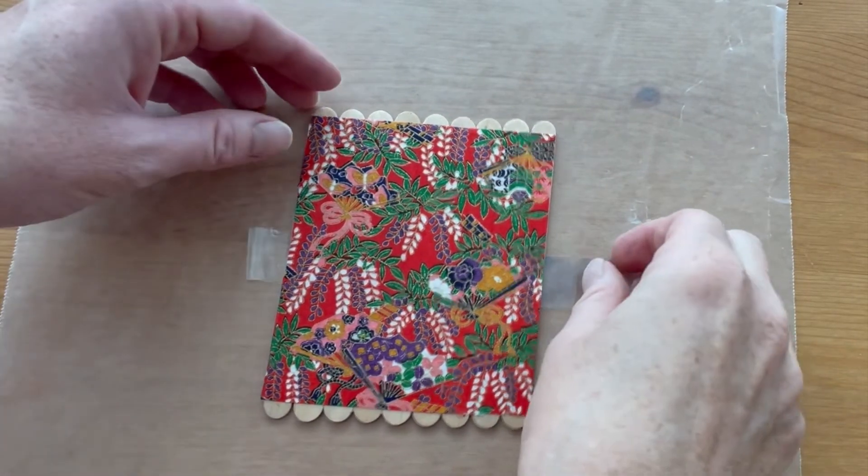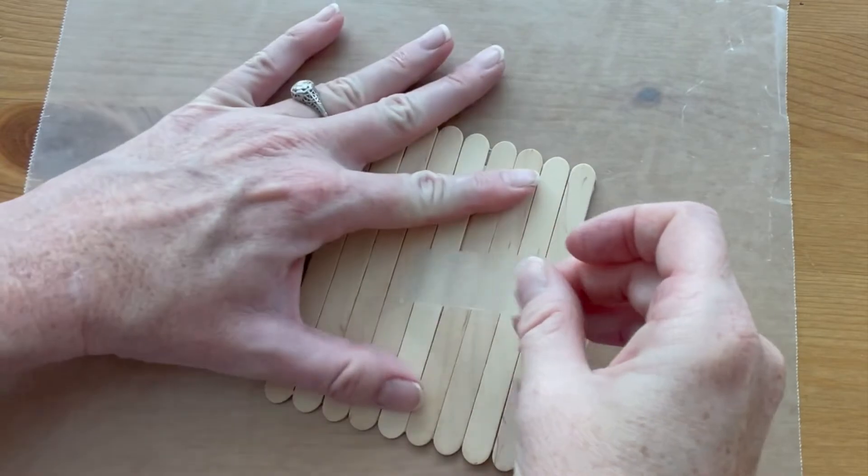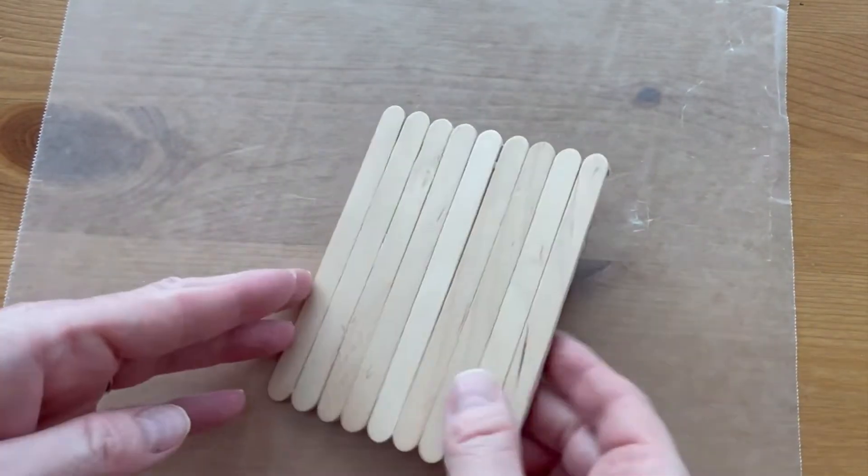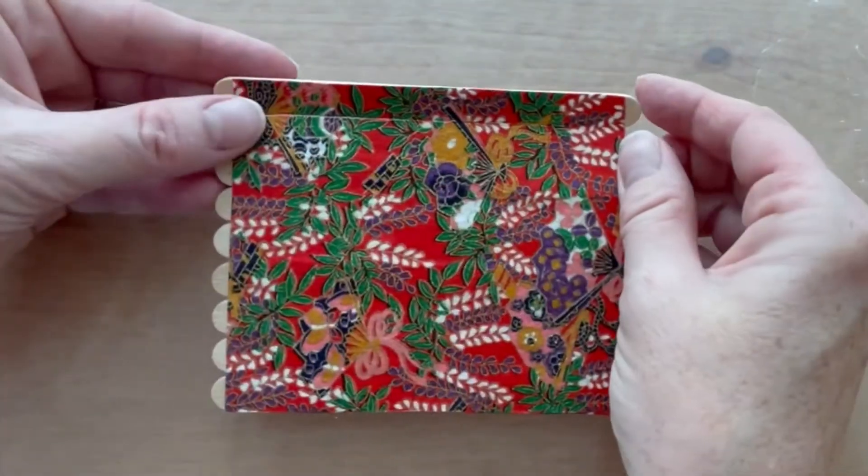Once the mod podge is completely dry, and you need to make sure it's 100% dry or this part isn't going to work very well, flip it over and carefully remove the tape. Now you're going to cut the sticks apart.